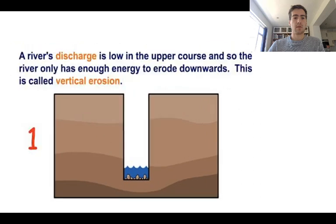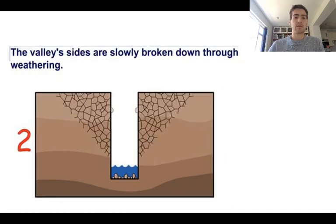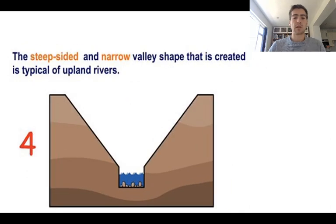So just to recap: it might start flat, but then vertical erosion causes the water to go downwards, and because of weathering and other processes the sides start to break down and fall in, and we're left with a v-shaped valley. That's the first feature we find high up in a river valley.